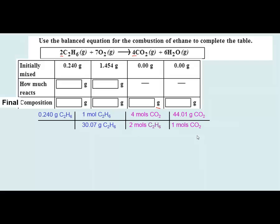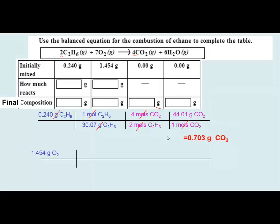After checking that all units cancel except grams of CO2, this gives me the gram quantity of carbon dioxide that would form if all the fuel combusted — 0.703 grams of CO2. Now for the other reactant: 1.454 grams of oxygen gas could be the limiting reagent. I calculate how much CO2 would form if all the oxygen were consumed. Whichever reactant produces the least amount of product is the limiting reagent, and that determines the theoretical yield.